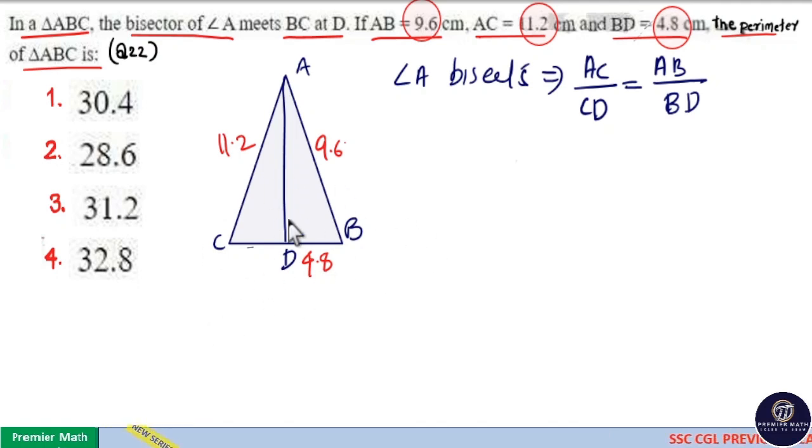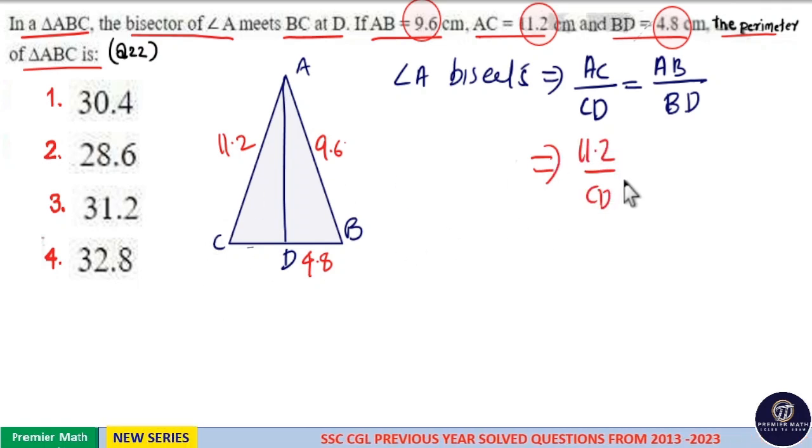Now, we have to find the perimeter. Here, by this rule, you can see AC is 11.2. 11.2 divided by CD is equal to 9.6 divided by 4.8.